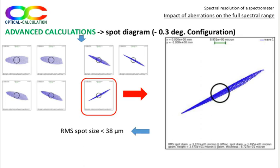In any case, the maximum RMS spot size is smaller than 38 microns at any height of the slit. The result is slightly identical with an angle change of plus 0.3 degrees. Thus, I will not present it.